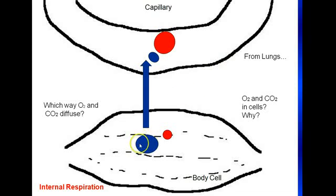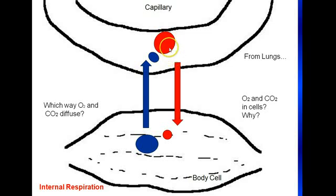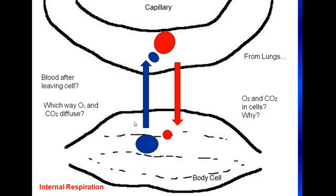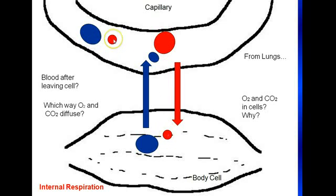Carbon dioxide is going to diffuse from the cells into the capillaries, from a high partial pressure or concentration to a low. Oxygen, on the other hand, is going to diffuse from the capillaries into the cells. Then the cells can use this oxygen and again produce more CO2. So what's the blood look like after leaving the cell? It's going to be high in carbon dioxide and low in oxygen, because the oxygen went into the cell and the carbon dioxide came from the cell into the blood.